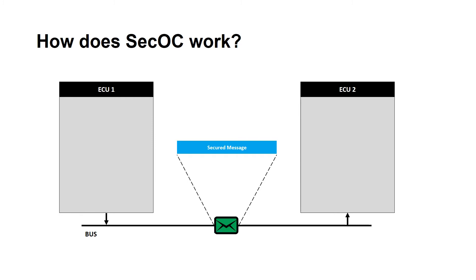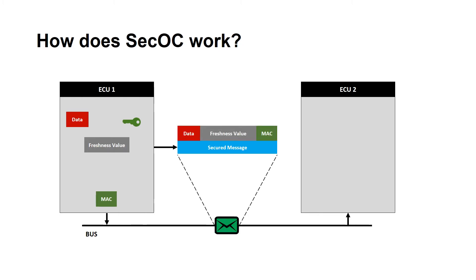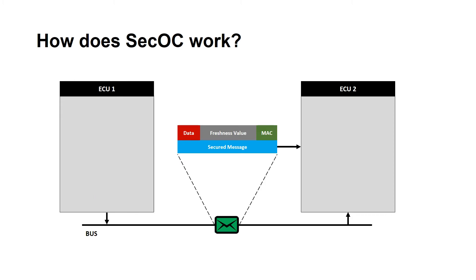Now let us look at how SecOC works. Consider two ECUs — ECU1 as a sender ECU and ECU2 as a receiver ECU. ECU1 consists of a MAC generator which can be any algorithm based on AES. The inputs to this MAC generator are the data, key, and freshness value. Freshness can be a counter or a timestamp. MAC is generated out of it and is appended to the outgoing Secured IPDU and sent to the receiver ECU.